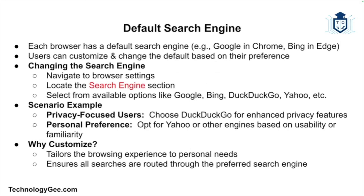Next, we have default search engine settings. Each browser has a default search engine — like Google in Chrome or Bing in Edge — but this can be changed based on your preferences. In your browser settings, look for the search engine section and choose from options like DuckDuckGo for privacy-focused searches or Yahoo for personal preference. Setting your preferred search engine as default ensures all your searches are routed through that engine, allowing you to tailor your browsing experience to your needs.